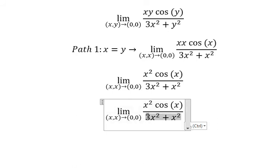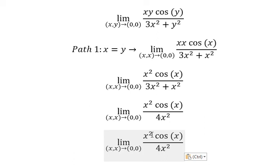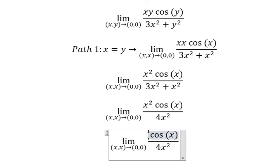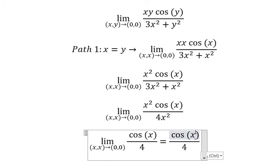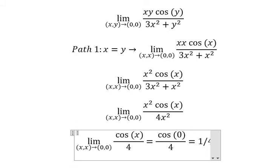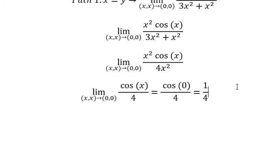You get 4x squared. x squared over 4x squared, we simplify. Now we put x equals 0 in here and you get 1 over 4.